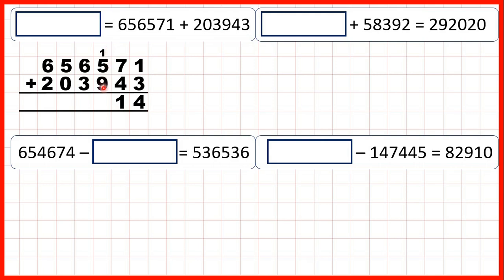1 plus 5 plus 9 is 15, so 1, 5. 1 plus 6 plus 3 is 10, so 1, 0. 1 plus 5 plus 0 is 6, and 6 plus 2 is 8, so our answer is 860,514.